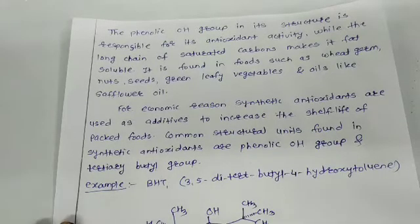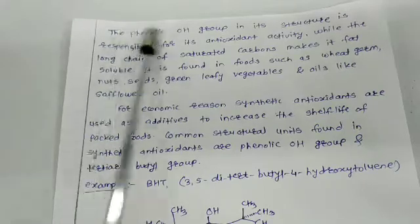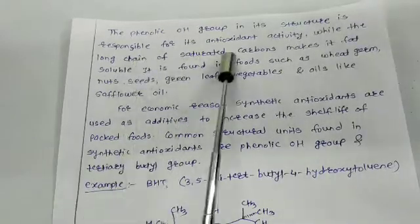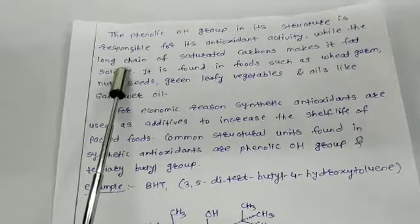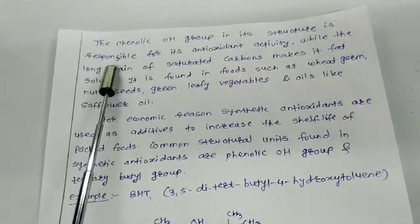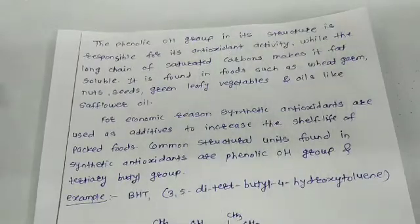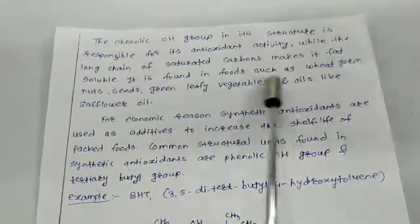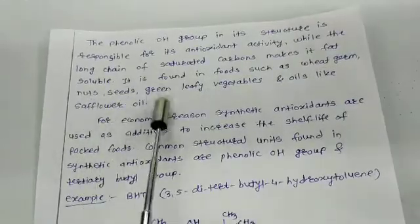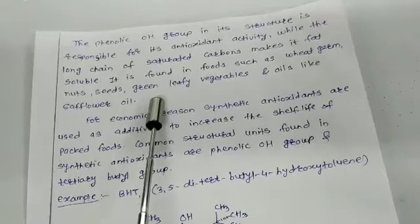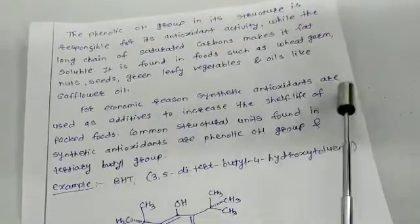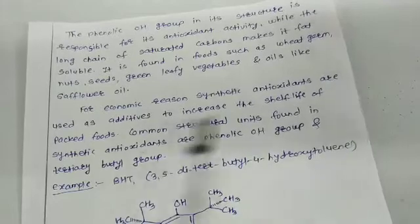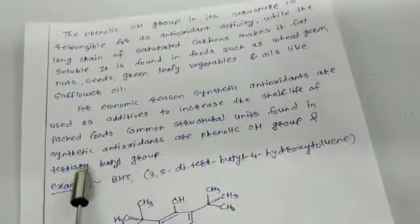This structure and this structure both are the same. It is vitamin E, that is tocopherol. And the phenolic OH group in the structure is responsible for its antioxidant activity, while the long chain of saturated carbons makes it fat-soluble. It is found in foods such as wheat germ, nuts, seeds, green leafy vegetables, and oils like safflower oil. For economic reasons, synthetic antioxidants are used as additives to increase the shelf life of packed foods. Common structural units found in synthetic antioxidants are phenolic OH group and tertiary butyl group.